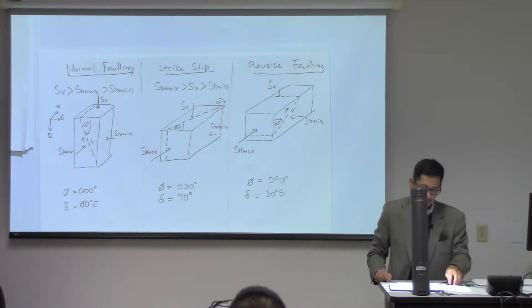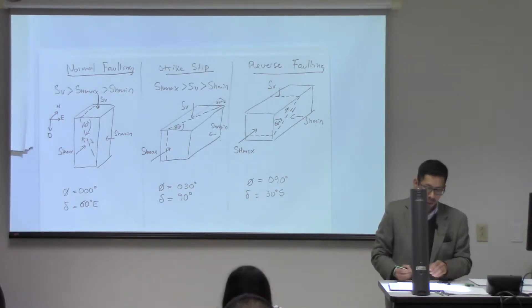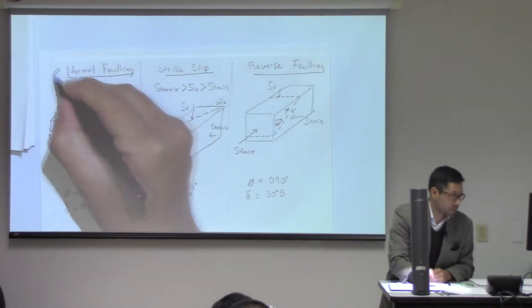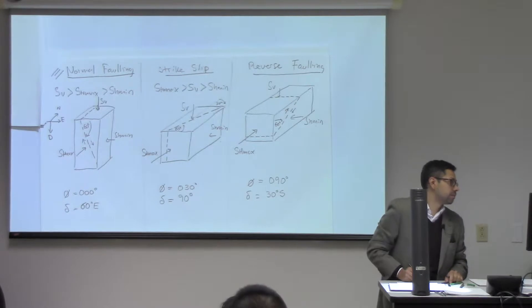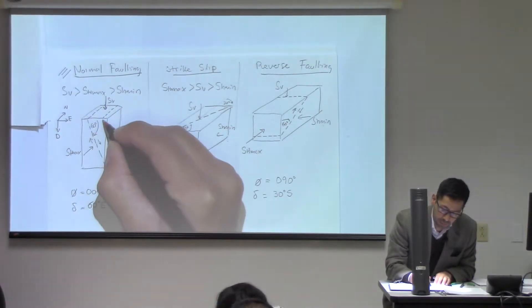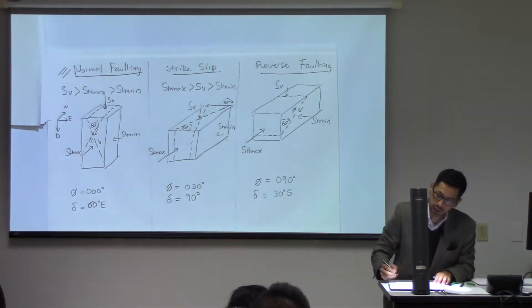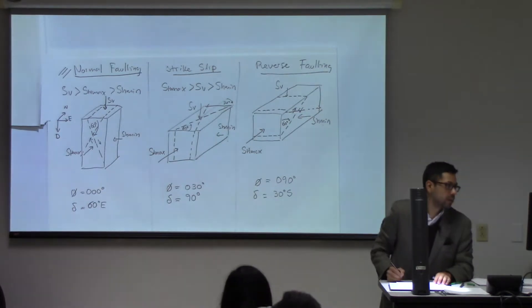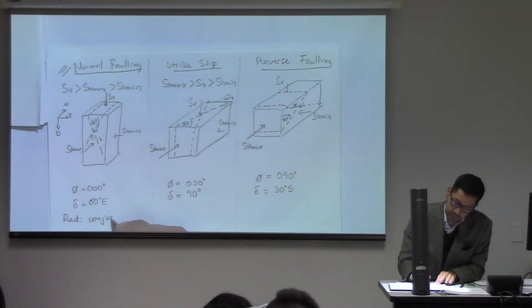We could have another solution for all of these cases, which are called the conjugate faults. The other solution for the same problem would be a fault that goes in that direction — a fault going in this direction, or a fault going like that. All those are also possible solutions. That's what is called the conjugate fault, shown here in red. I looked at the scans of my notes and there you can see the colors very clearly.